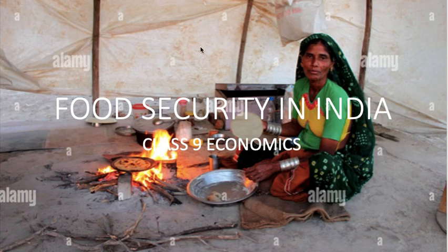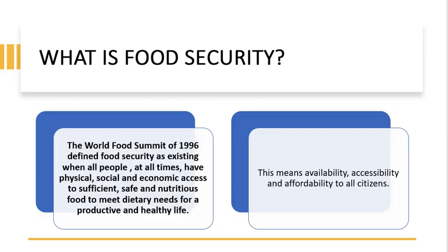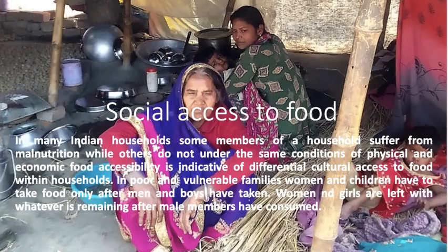Food security in India — Class 9 Economics. What is food security? The World Food Summit of 1996 defined food security as existing when all people at all times have physical, social, and economic access to sufficient, safe, and nutritious food to meet dietary needs for a productive and healthy life. This means availability, accessibility, and affordability to all citizens.